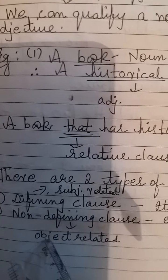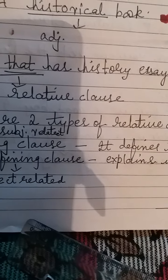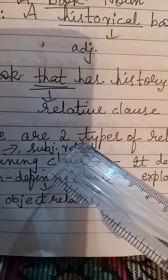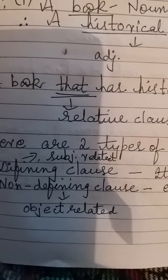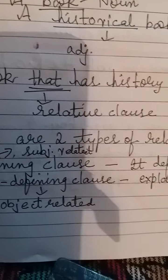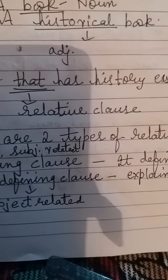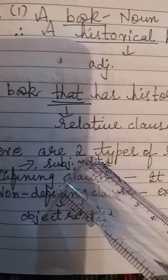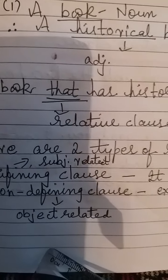There are two types of relative clauses: one is the defining clause and the other is the non-defining clause. This is a very important component of grammar up to 10th standard. The defining clause is subject-based, while the non-defining clause is object-based. Always remember: defining clause defines the noun; non-defining clause explains it in detail.